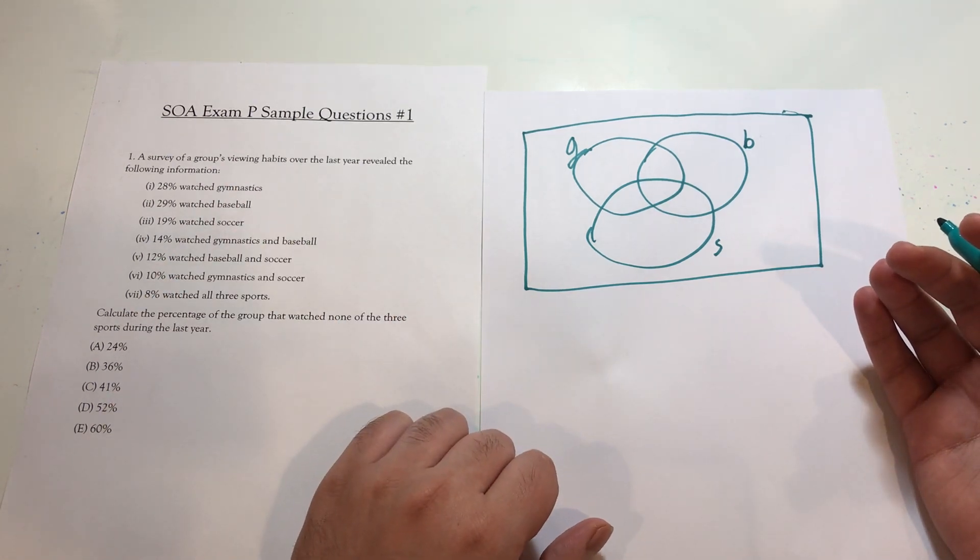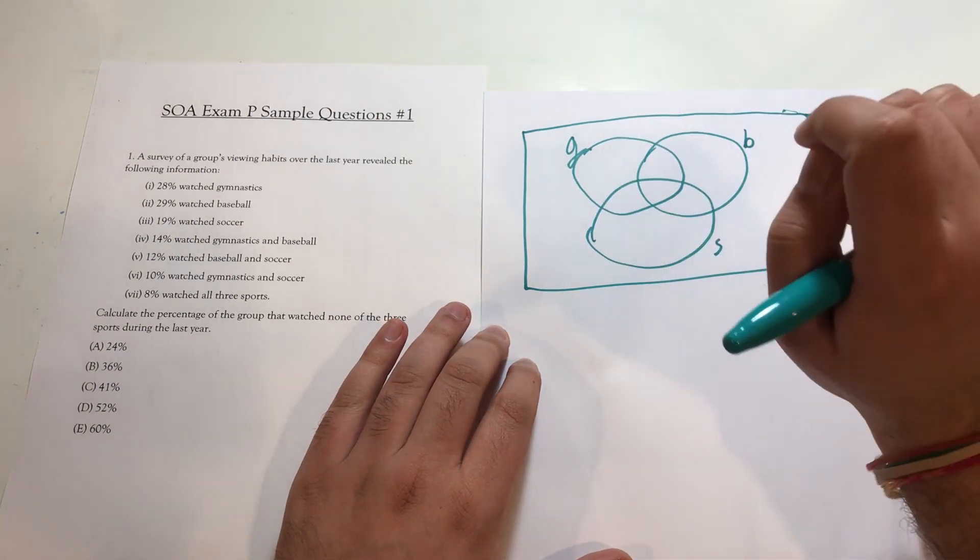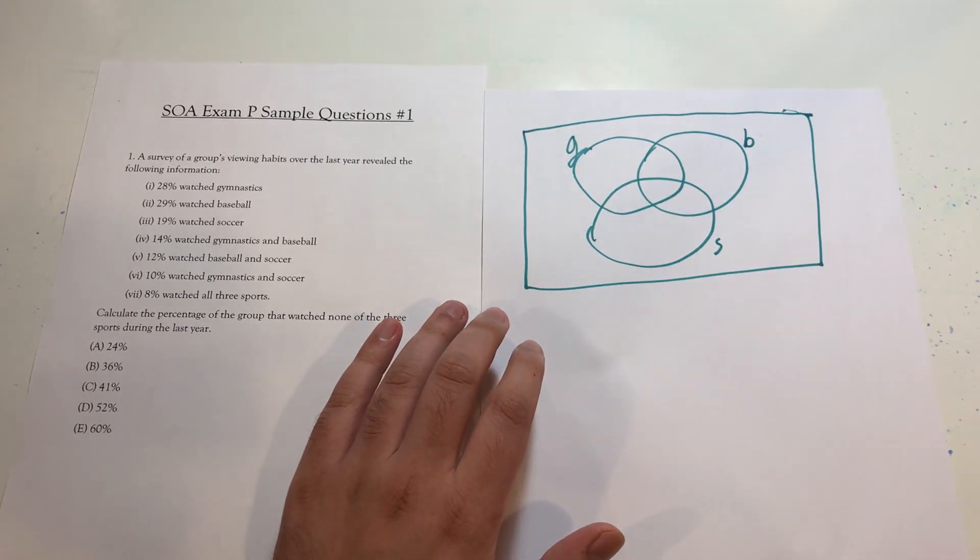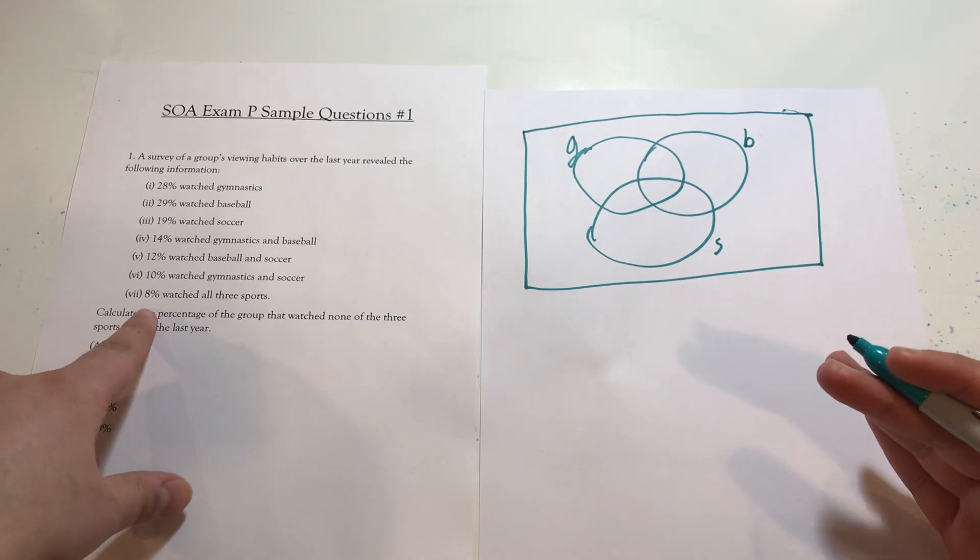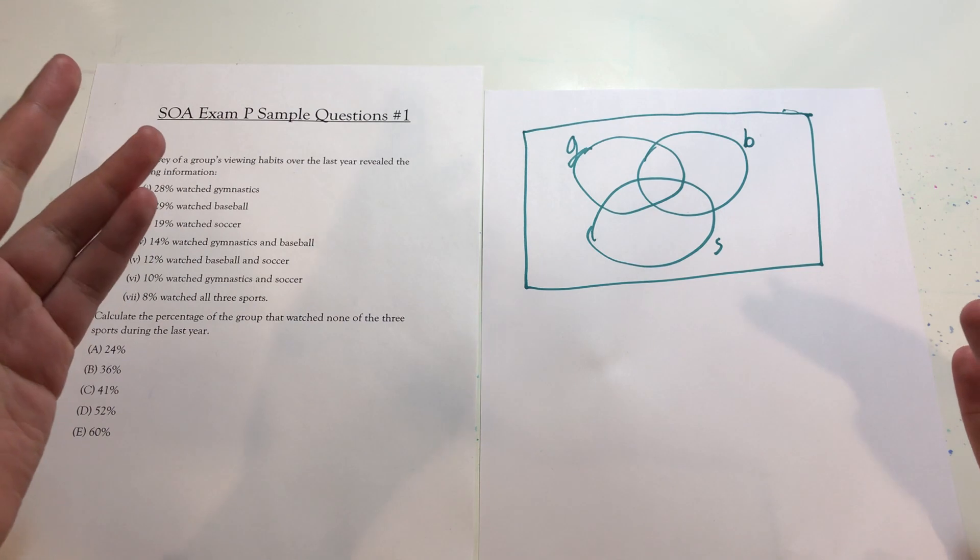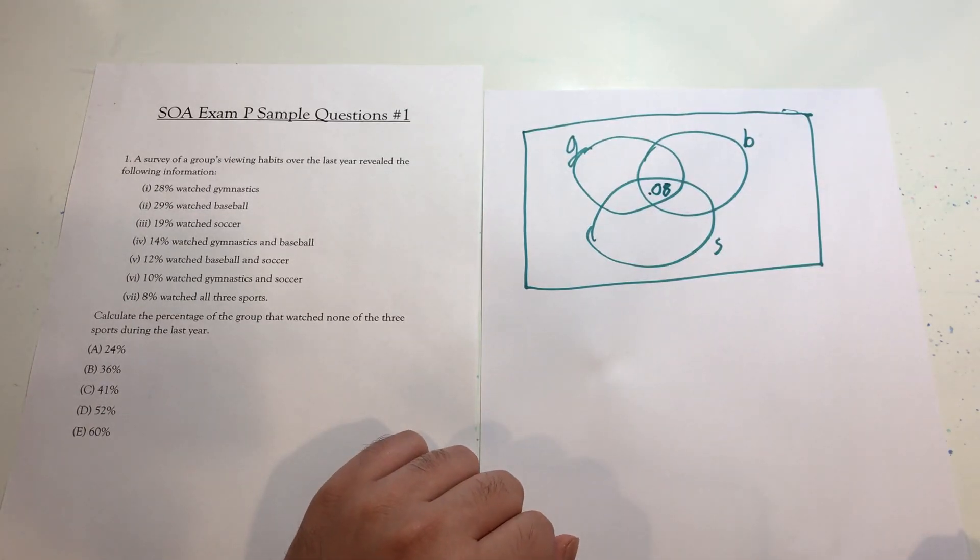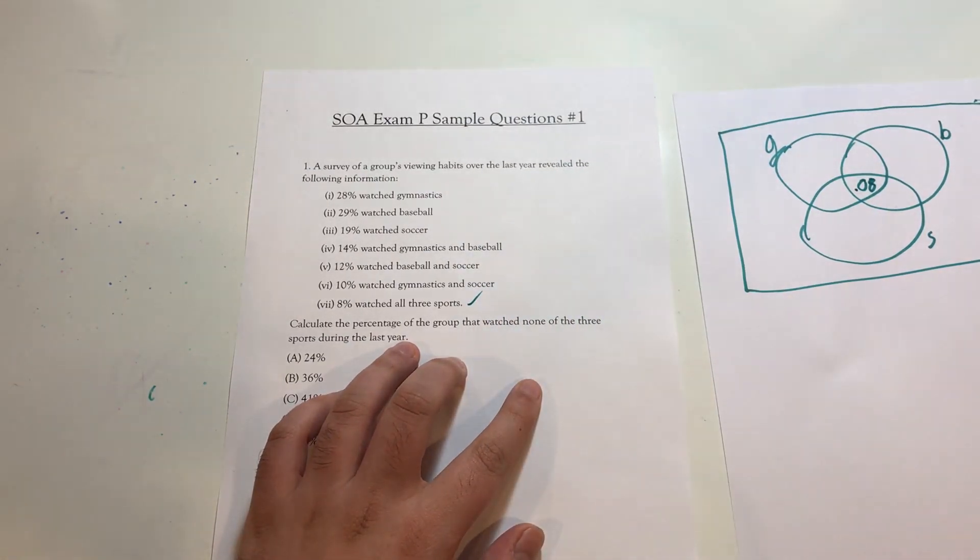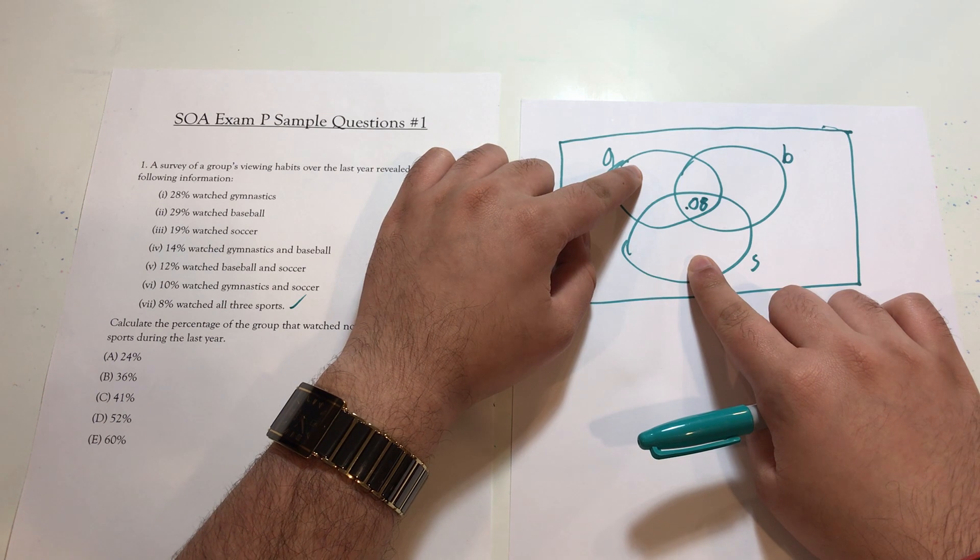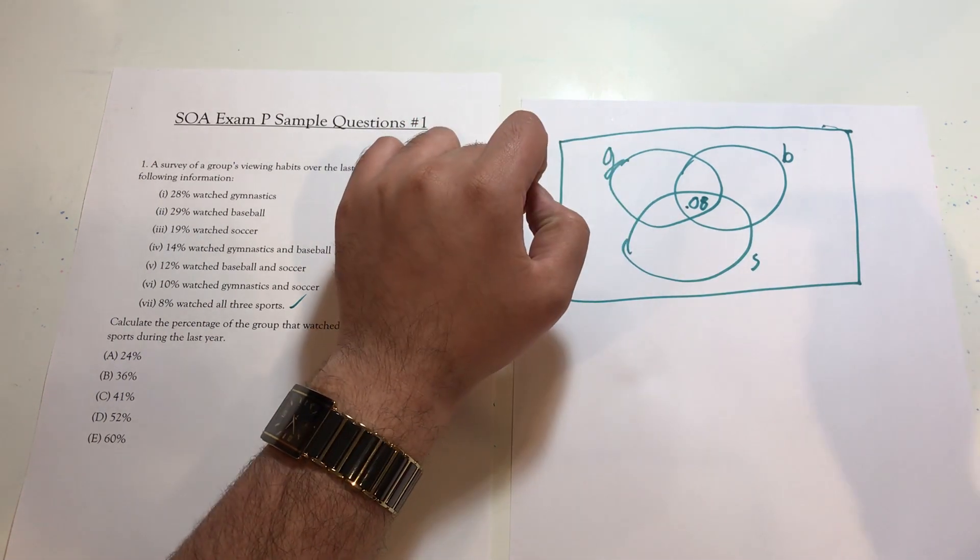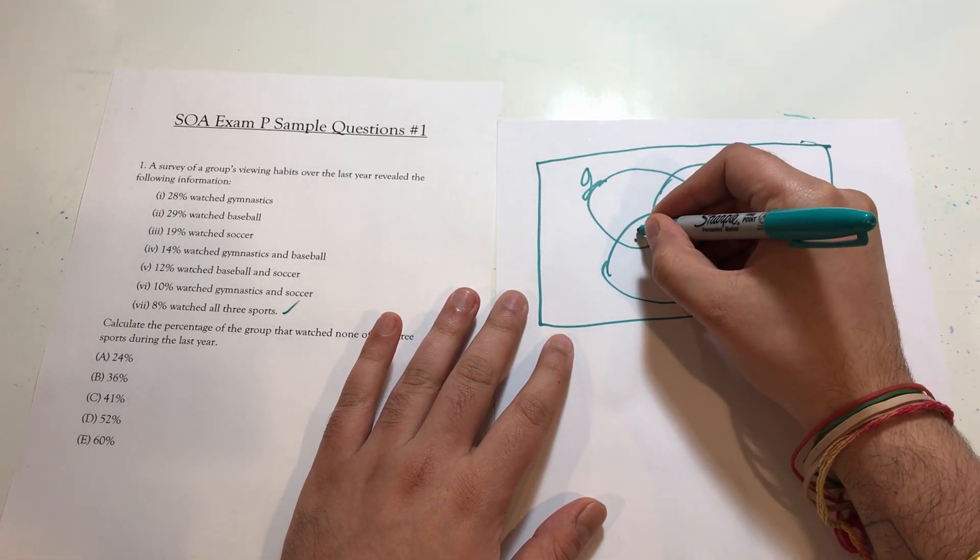So 28% watched gymnastics, and that happens to include not only this section, which would be the people that watched gymnastics and only gymnastics, but all of these sections combined. So I'm not sure exactly where to put that number. Because of that, I want to start from the bottom. 8% watched all three sports, so I'm going to put a 0.08 there. 10% watched gymnastics and soccer. That means these two sets, the intersection of them, should be 10% or 0.1. Meaning in order for this whole thing to be 0.1, this must be 0.02.